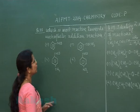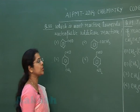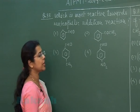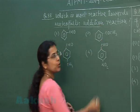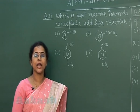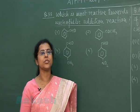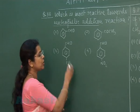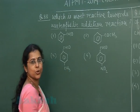Question number 88: which is most reactive towards nucleophilic addition reaction? First option is benzaldehyde, second is a ketone, third is methyl benzaldehyde, fourth is para-nitrobenzaldehyde. Nucleophilic addition reaction mainly depends upon the steric factor — if steric hindrance around the carbonyl group is more, the reactivity will be least. Steric hindrance is maximum in the case of ketone, so ketones are less reactive than any of the aldehydes.